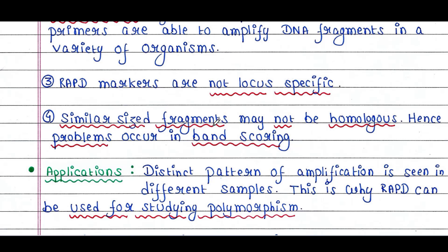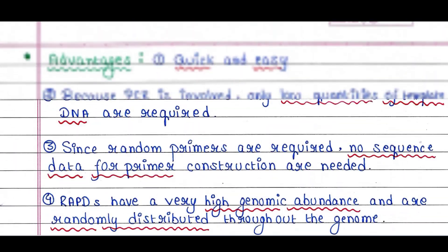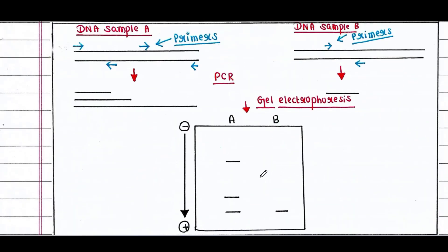Similar sized fragments may not be homologous. Hence, problems occur in band scoring. If you see this gel, you can find similar sized bands from both samples. This band and this band look similar, but these two are not homologous regions of DNA. This band represents this part, and this band represents this part, and these two are not the same. Hence, similar size doesn't indicate similar region.